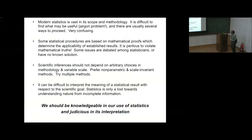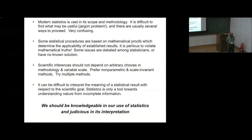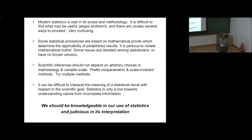Scientific inference should not depend on arbitrary choice of methodology. It can be difficult to interpret the meaning of a statistical result with respect to a scientific goal. If you ask a statistician whether you would like to confirm a certain thing, he would say probably with 95% confidence it is true or false, with plus or minus 1% error. So how do you interpret that? That's where input from domain science is very important.